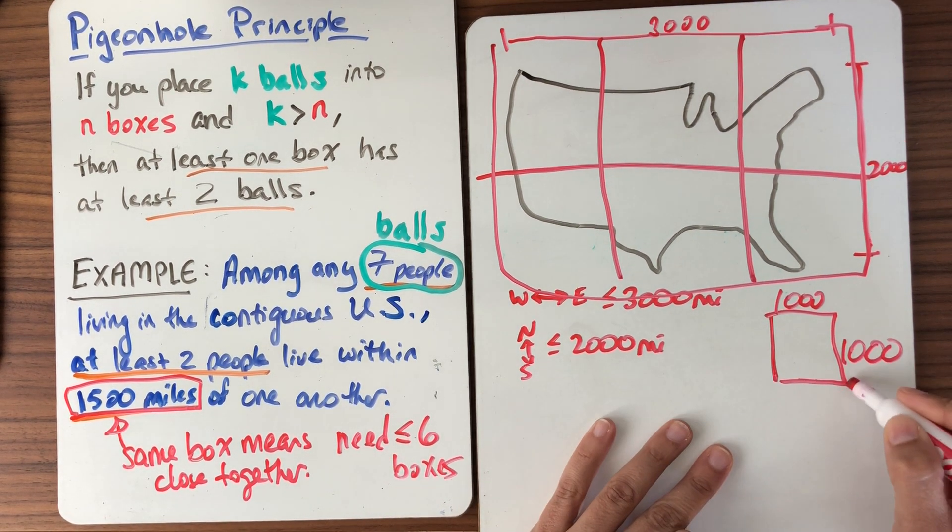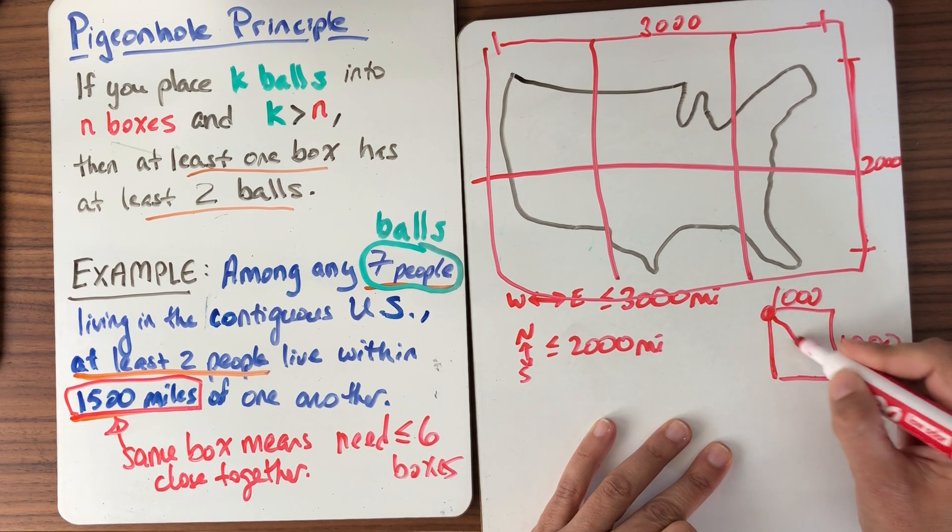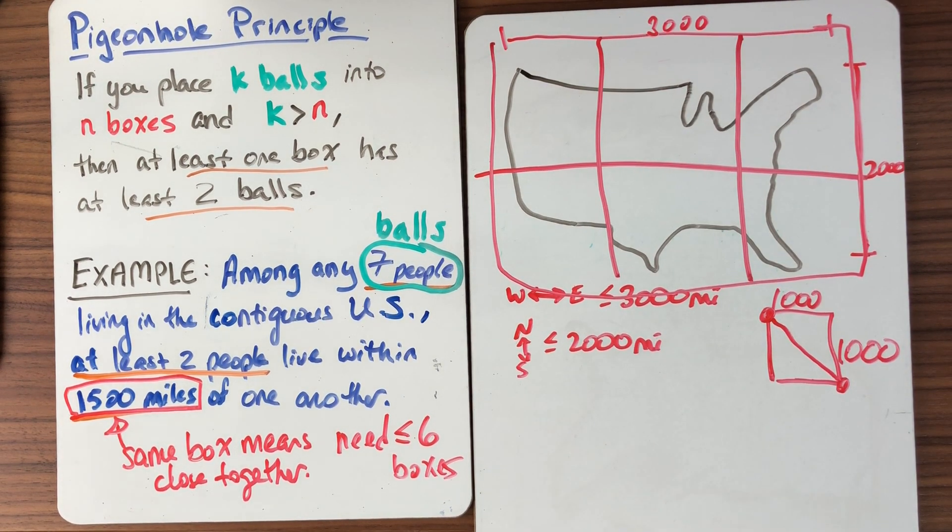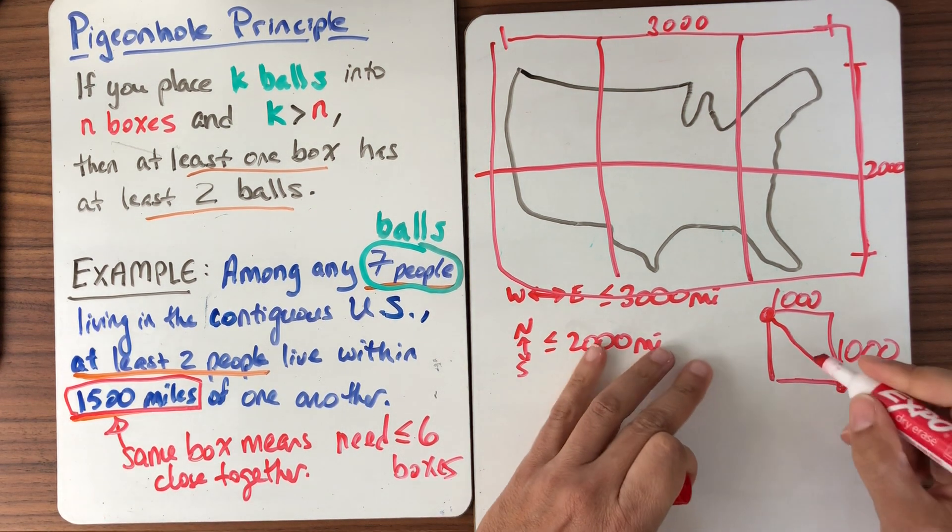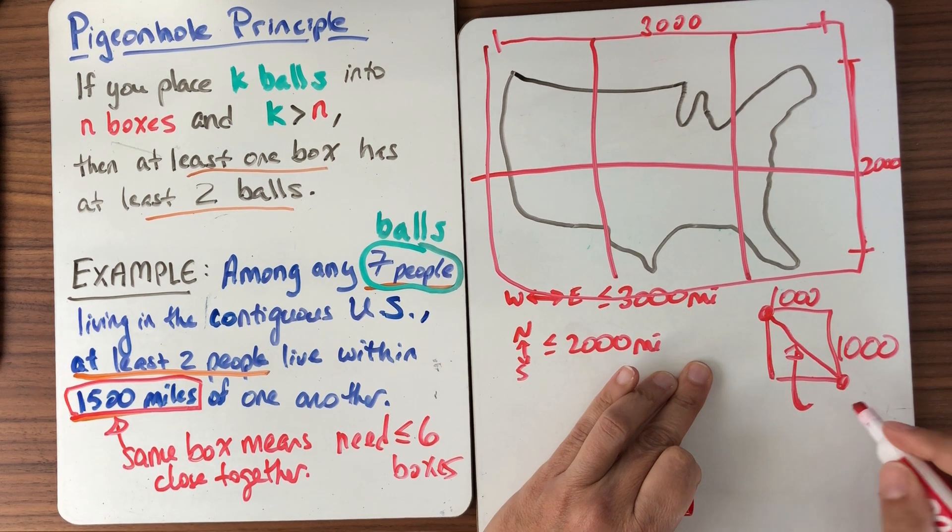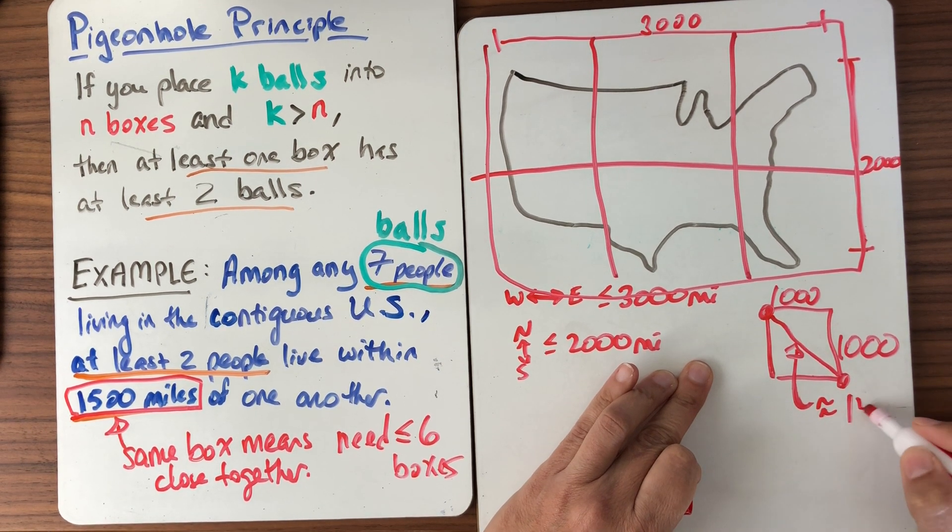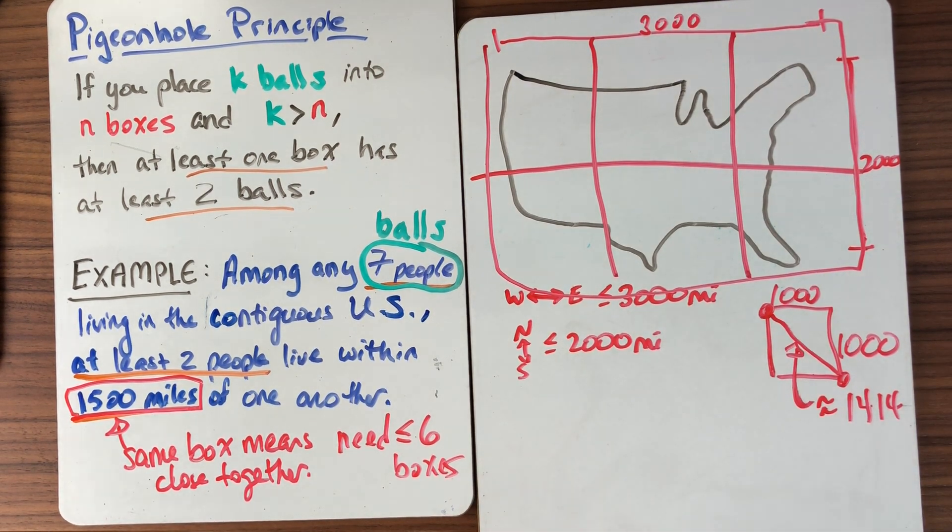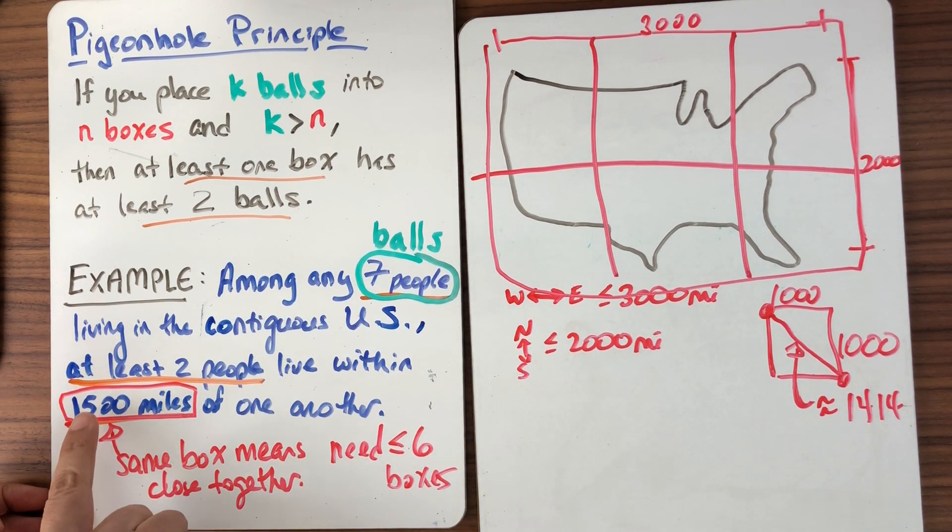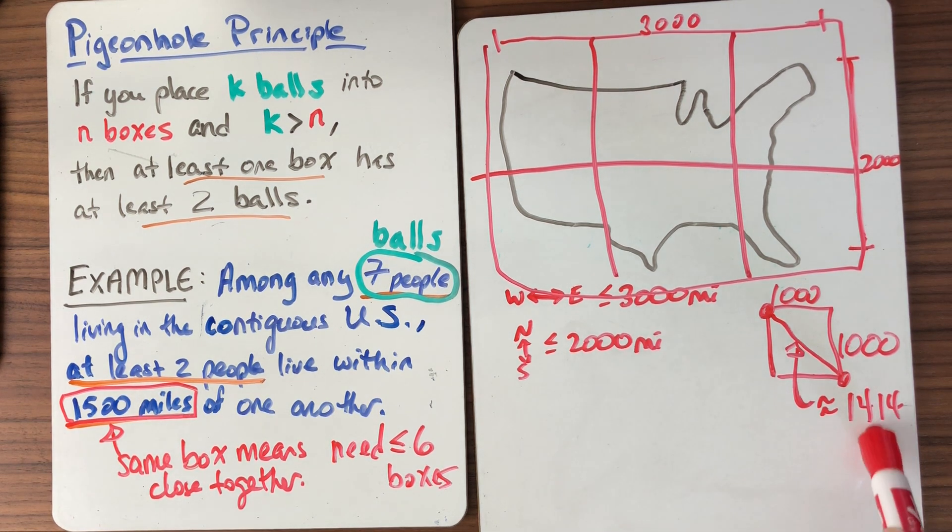So the farthest away two people could live in a square is if they live catty corner like this. So what's that distance? Well, just switch your units a little bit. It's a one by one unit square. So what's the hypotenuse of that? It's the square root of two. So this distance here is approximately 1,414 miles, which is less than 1,500. So now I think, aha, this was a clever problem, and I'm on to something here.